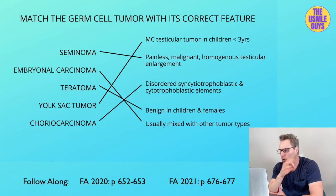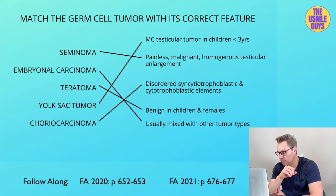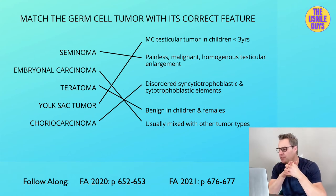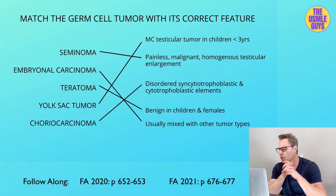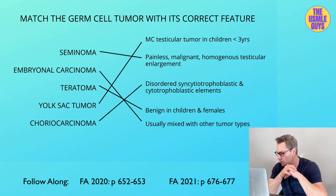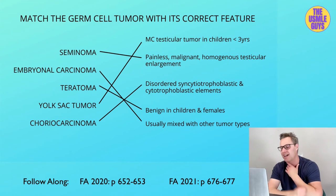Next up is the teratoma. Don't forget this contains tissues derived from all three germinal layers. A mature teratoma can be malignant in an adult male but is benign in children and females — you want to keep this exception in mind. These usually grow fairly large and are composed of cysts filled with yellow, thick, sebaceous material. The only hormone abnormality you might find with the teratoma is a slight increase in AFP, but it could also be normal.